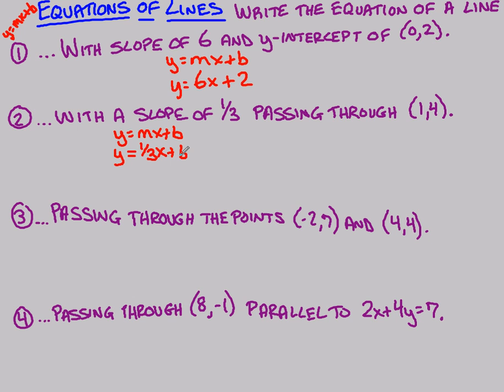To do that, I have a point that I can work with. So, let's plug in those values. Let's plug in 4 for y, and 1 for x. And now, we need to try to solve for b. So, that means 4 equals this will be 1 third plus b. To get b by itself, I need to subtract 1 third from both sides.